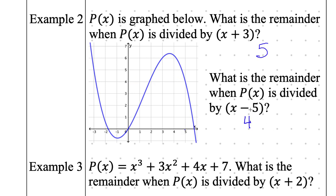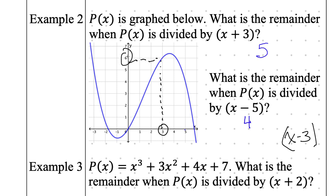Let's try a random question — dividing by x minus 3. If I did x minus 3, what is the remainder of that polynomial when I divide by x minus 3? I switch it to a positive 3, come to positive 3, and try to find the y coordinate where this intersects the graph. This intersects the graph up here at positive 6. So look at the corresponding y value when x equals 3. When I divide by x minus 3, the remainder is 6.